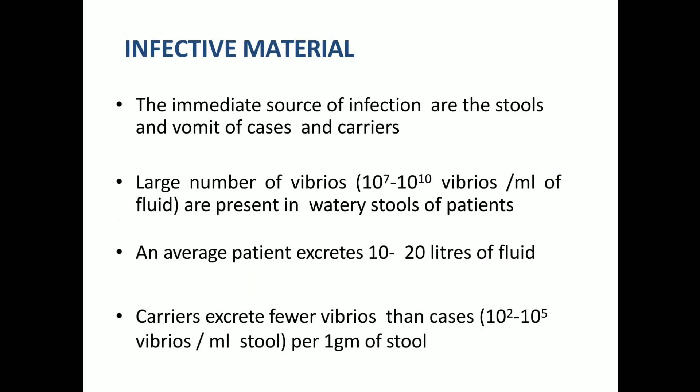Coming to the infective material: the immediate source of infection is mainly the stools and vomit of cases and carriers. A large number of Vibrios — that is 10 to the power of 7 to 10 to the power of 10 Vibrios per 1 ml of fluid — are present in the watery stools of patients. An average patient excretes about 10 to 20 liters of fluid during acute diarrheal disease, enabling them to infect others.